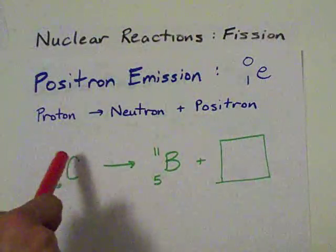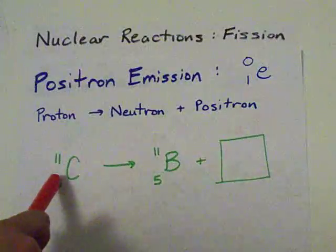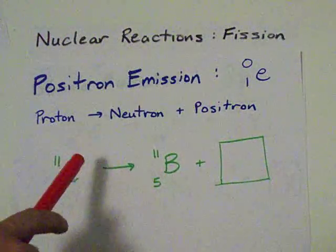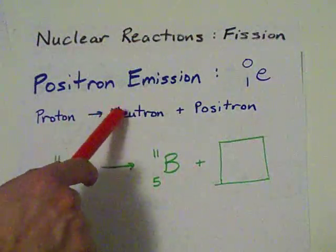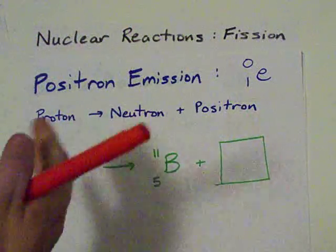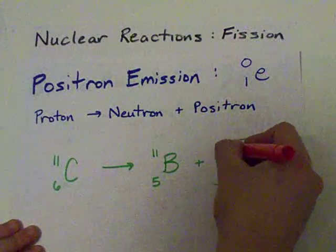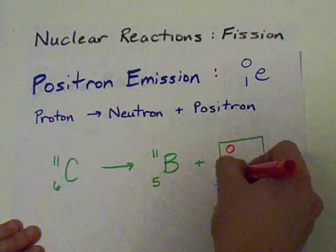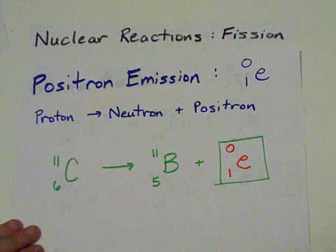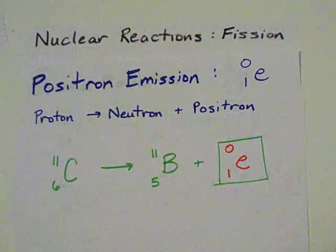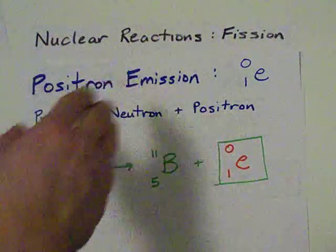When carbon 11 breaks up into boron 11, what you'll notice is we've actually lost a proton, but our mass hasn't changed. That's because the proton has decomposed into a neutron. But for that to happen, you actually have to have no change in mass, lose one proton, and actually an electron or a particle with the same mass as an electron but with the opposite charge is ejected, and it's called a positron.